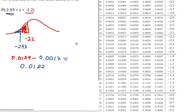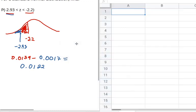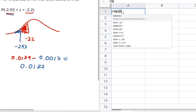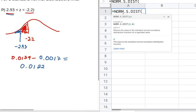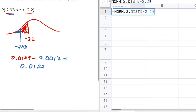Now, if I want to use this on a spreadsheet, I can do this a couple ways. First, find the area to the left of negative 2.2. I'm going to use the NORM.S.DIST formula for the standard normal distribution, and I'm going to plug in negative 2.2. This will give me the area to the left of negative 2.2.